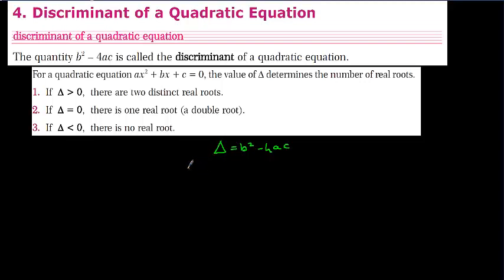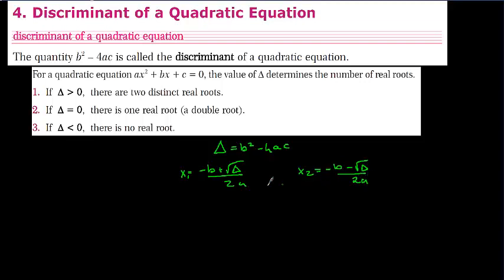With respect to that, we were finding x1 is equal to minus b plus root of delta over 2a, and x2 is equal to minus b minus root of delta over 2a. So these are the roots, and while you are finding the roots, you are using the square root of delta. The square root of delta is important for us for finding the roots or to give information about the roots.